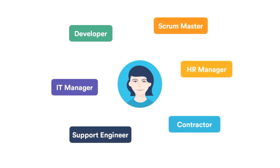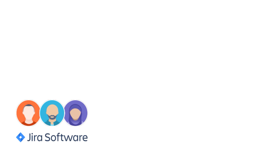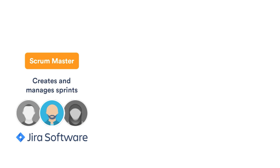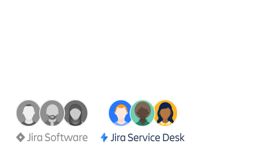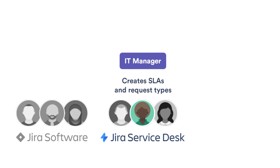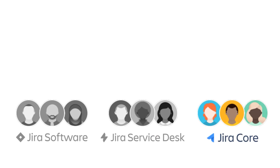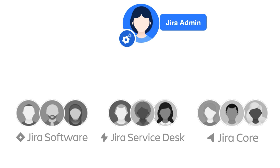What you can do in Jira depends on what role you have in your organization. For example, the whole software development team has access to Jira Software to manage their software projects, but only scrum masters can create and manage sprints. Support teams have access to Jira Service Desk to run their help desks, but only IT managers can create service level agreements and request types. And business teams use Jira Core to manage their tasks, but only managers can create reports. Your Jira administrators set up your access and permissions based on your job role. They control what Jira applications you have access to and what you can do in Jira. You may have access to multiple Jira products or only one, and you may be able to perform different tasks than others in your team.